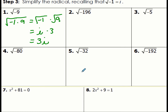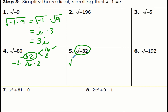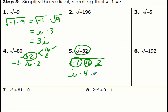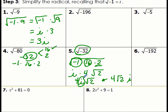Let's look at number 5. I'm going to break down negative 32: it's negative 1 times 16 times 2, and 16 is a perfect square. So we have the square root of negative 1 times 16 times 2. The square root of negative 1 is i, the square root of 16 is 4, and 2 is not a perfect square so it stays under the radical. We write it as 4i radical 2. Most people put the imaginary number before the radical sign.